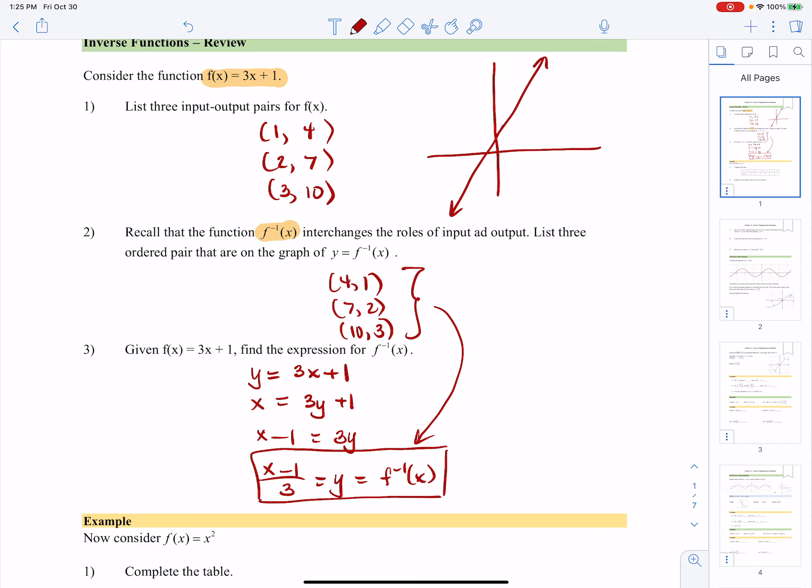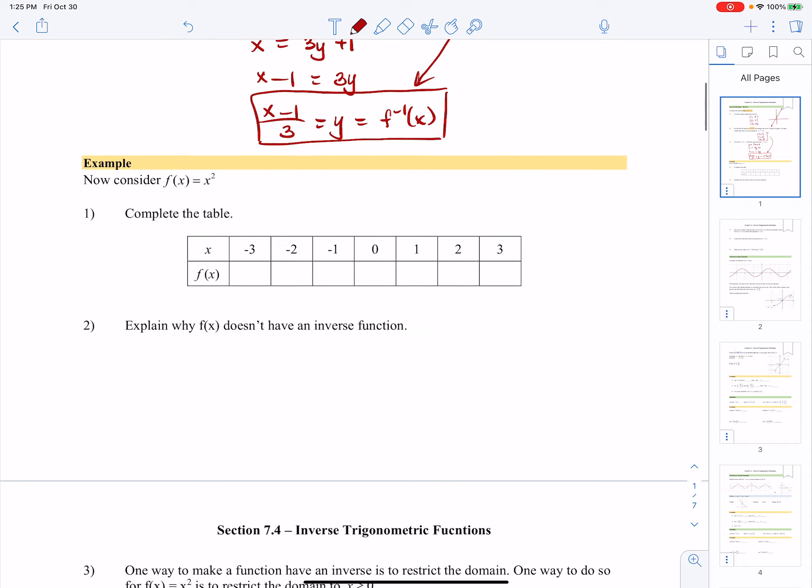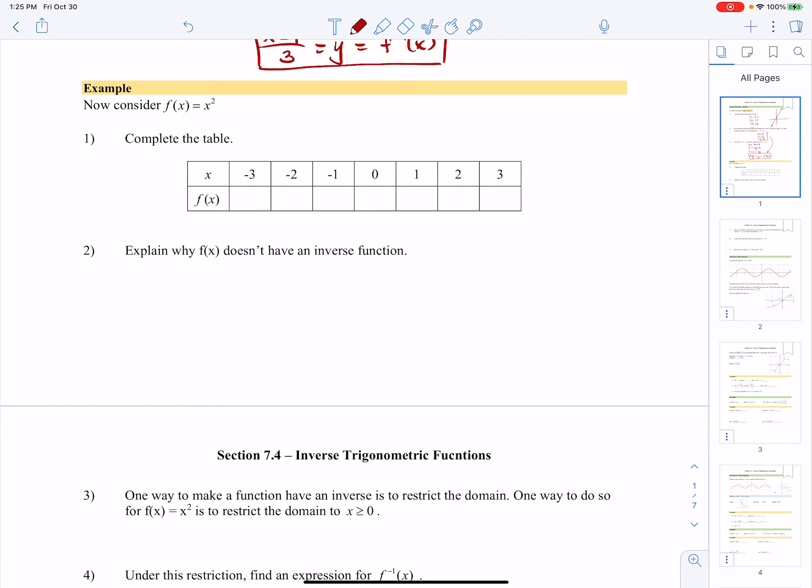Okay, now, what happens when the function doesn't necessarily have an inverse? Well, let's just look at this here. So f of x equals x squared. And again, we'll do input-output pairs again, but I've given you the x values I want you to look at. So this is going to be 9, 4, 1, 0, 1, 4, 9.